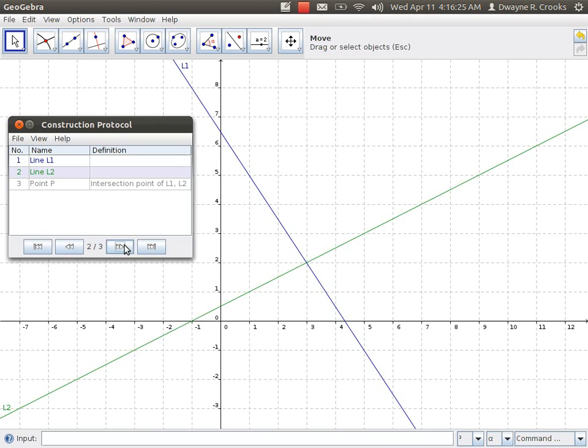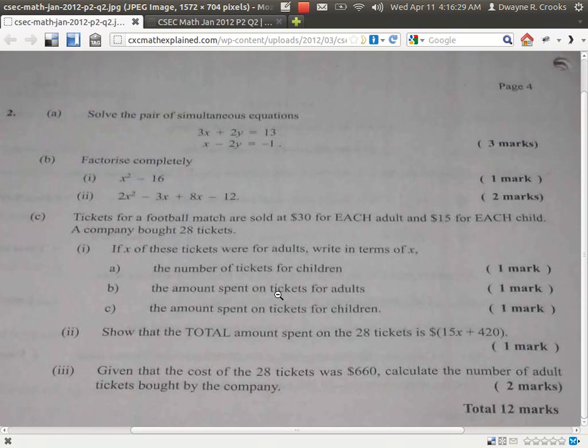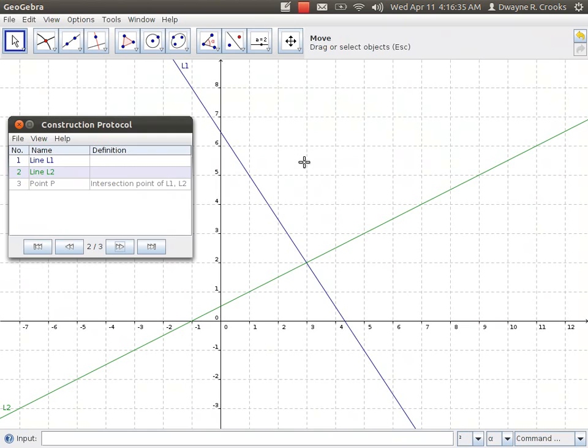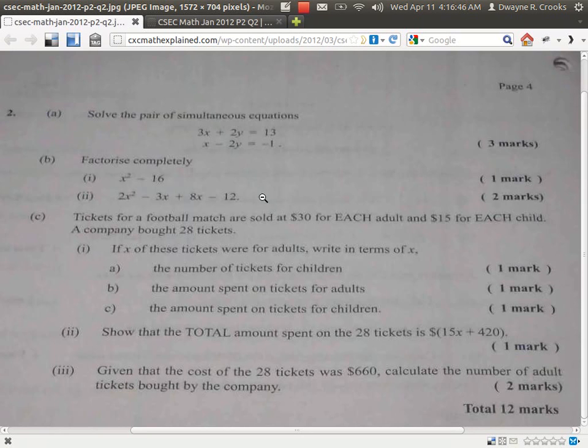This is line one here in blue, and line one represents the equation 3x plus 2y equals 13. And then line two is this line here in green, and this line represents x minus 2y equal negative one. Notice that they intersect at this point here. Let's plot that point of intersection.